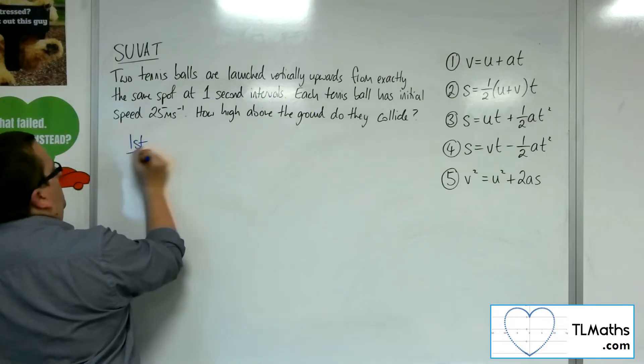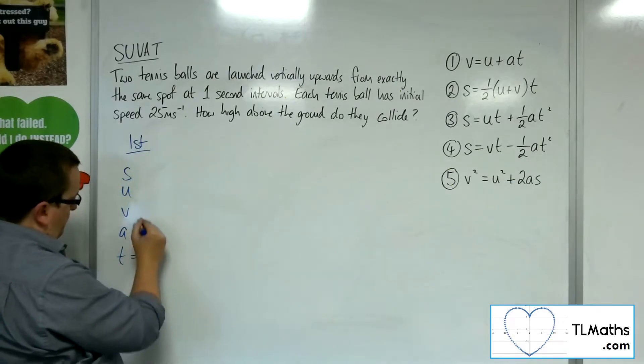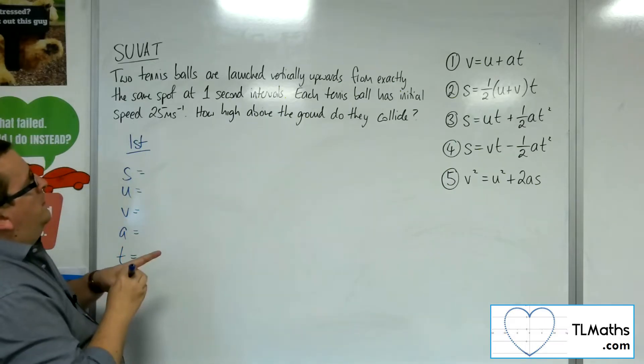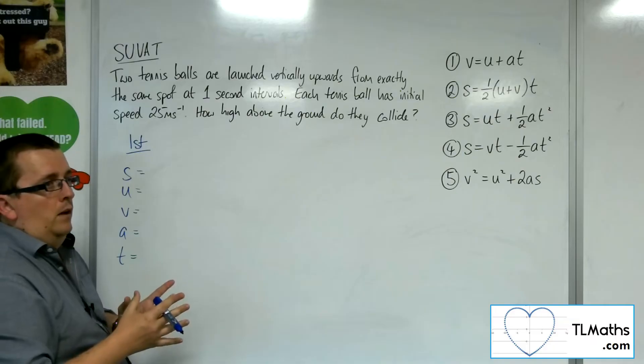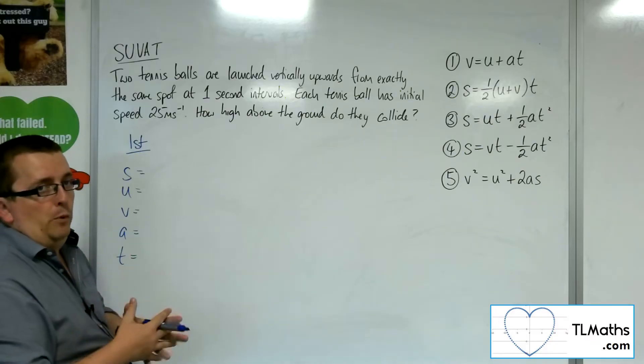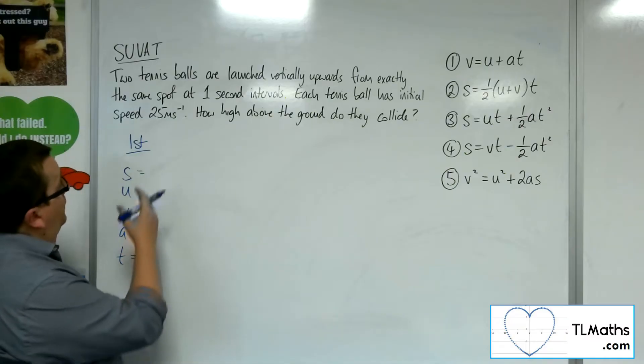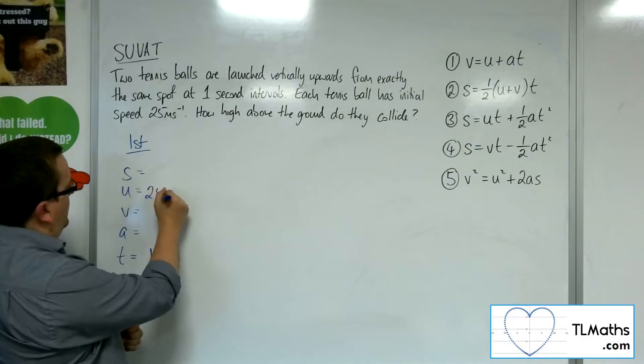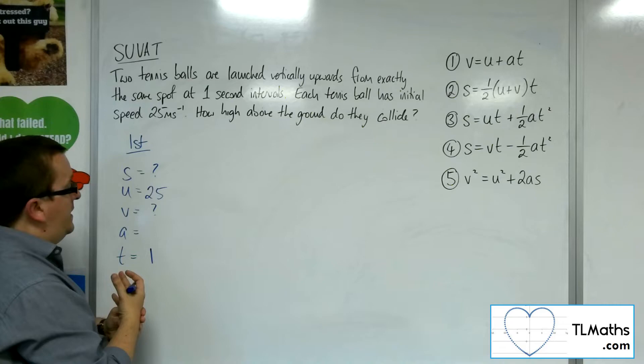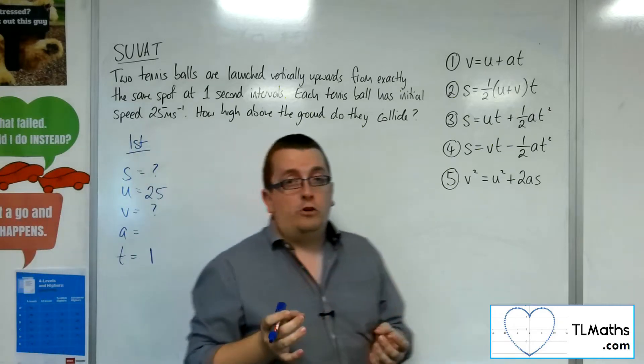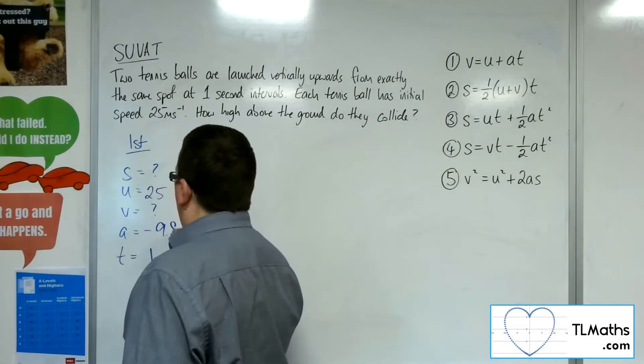So the first ball, if we write out our SUVAT equations, we're just looking to see how far up that first ball is after one second. So t is 1, the initial velocity was 25. I don't know the final velocity, I don't know the displacement - that's what I want to find out. The only other thing that I do know is the acceleration, which is just going to be due to gravity, so that's minus 9.8.